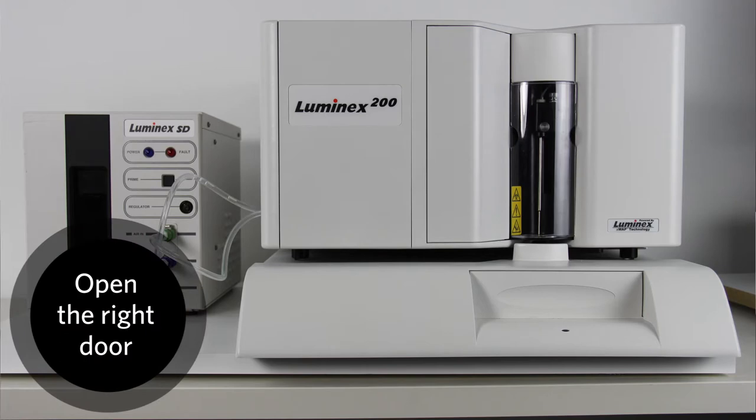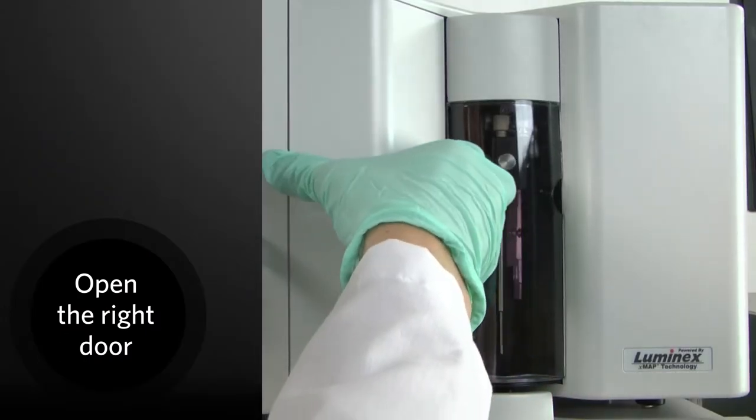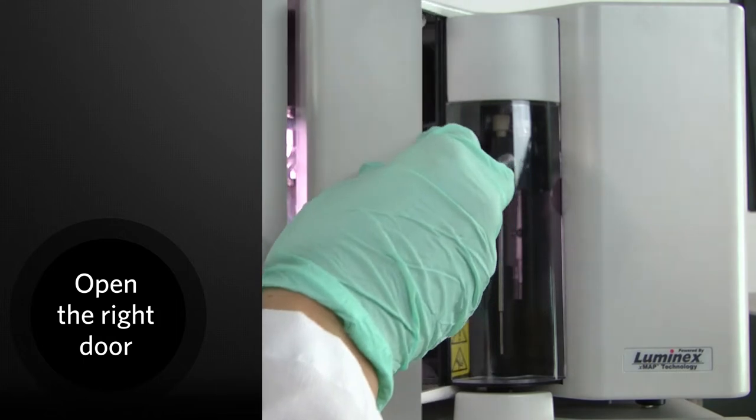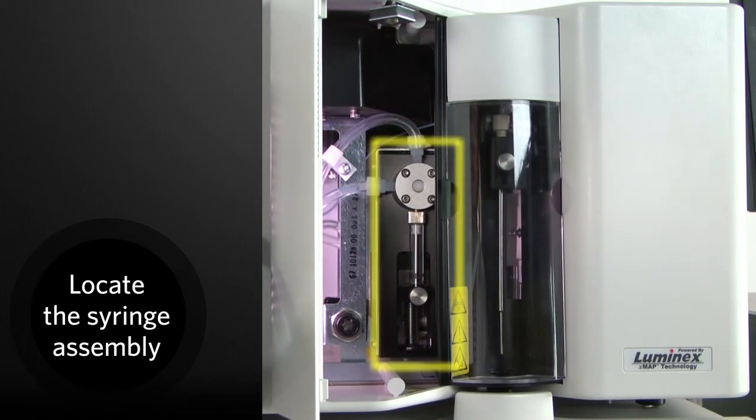Open the front center door of the analyzer. Locate the syringe assembly. Look for the glass cylinder with a metal rod plunger inside.